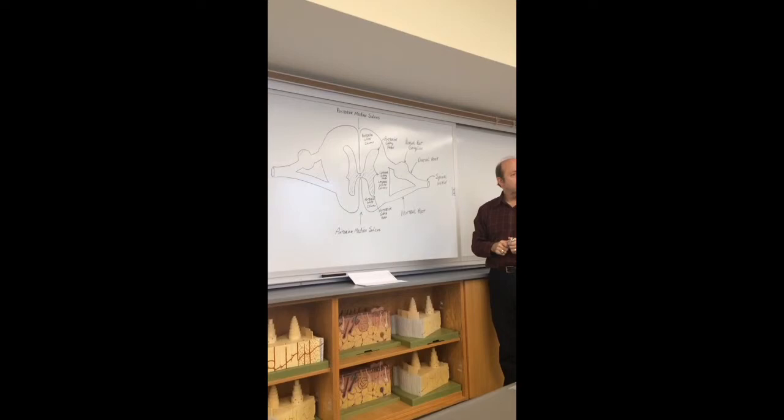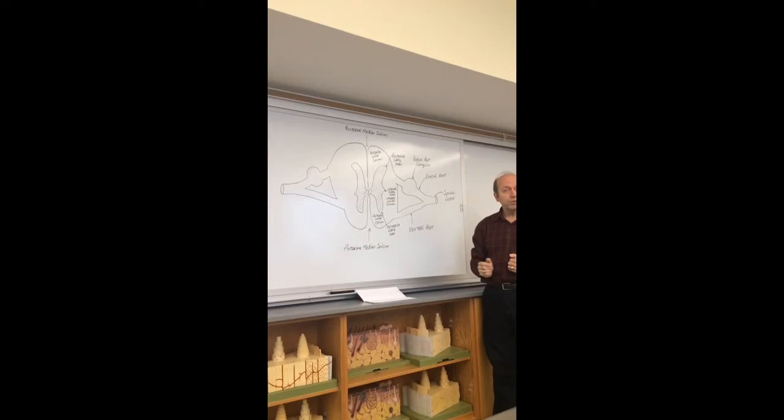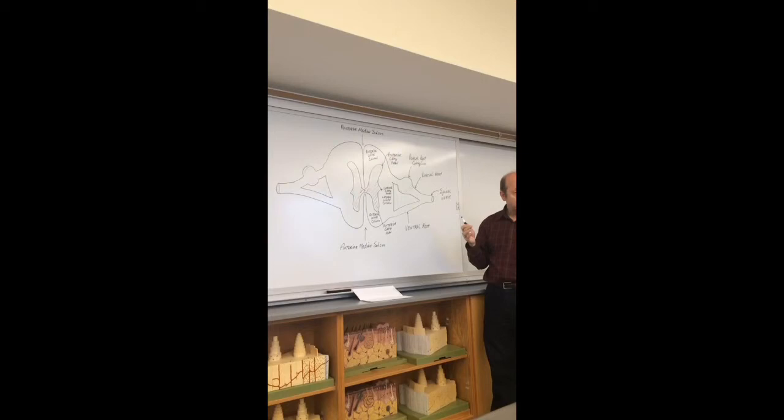Posterior white column. Lateral white column. Anterior white column. Posterior gray horn. Lateral gray horn. Anterior gray horn. Kind of repetitive, isn't it? So that should be easy to kind of see on your models. It really is pretty visible.